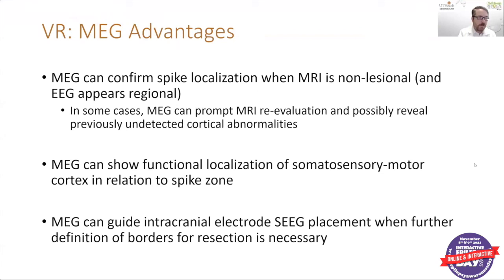For this case specifically, MEG advantages include: MEG can confirm spike localization when the MRI is considered non-lesional and the EEG appears to involve a regional area. MEG can also prompt MRI reevaluation and possibly reveal previously undetected abnormalities of the brain tissue. MEG can show functional localization of somatosensory or motor cortex in relation to the seizure onset zone, and MEG can guide intracranial stereo EEG electrode placement when further definition of the borders for surgical resection is needed.